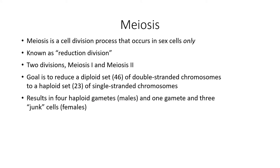Let's review. Meiosis is a cell division process that occurs in sex cells only. We sometimes call it reduction division, and we have to go through two division processes. Meiosis 1 separates homologous chromosomes into separate cells. Meiosis 2 will then take those double-stranded chromosomes and separate them into single-stranded chromosomes. Our goal is to ultimately end up with a haploid set — that's 23 single-stranded chromosomes — and we're going to end up with a total of four cells.